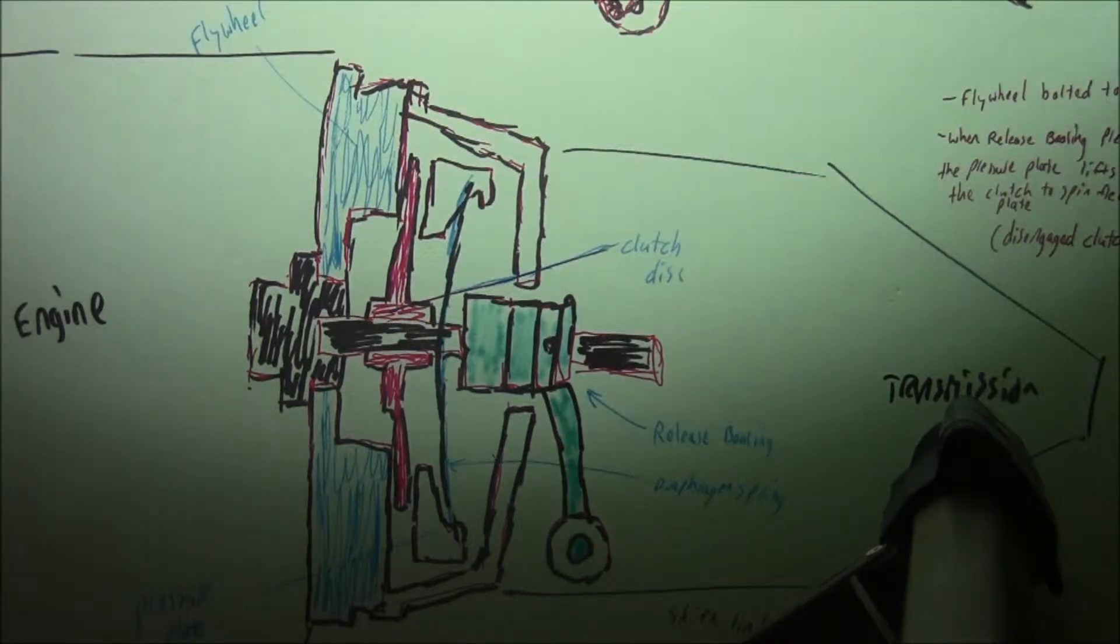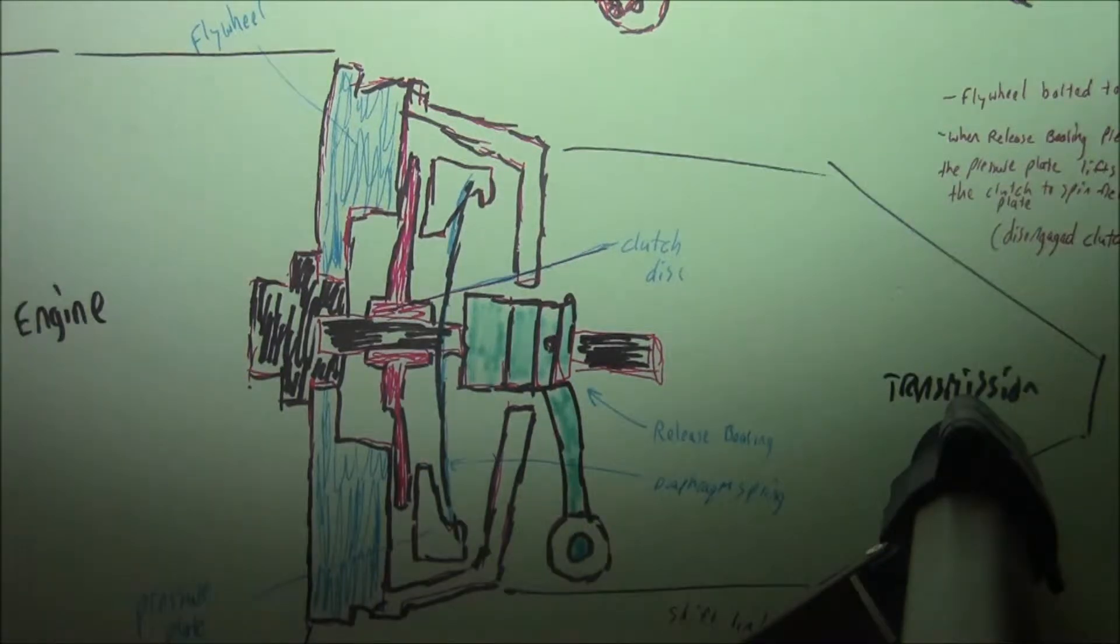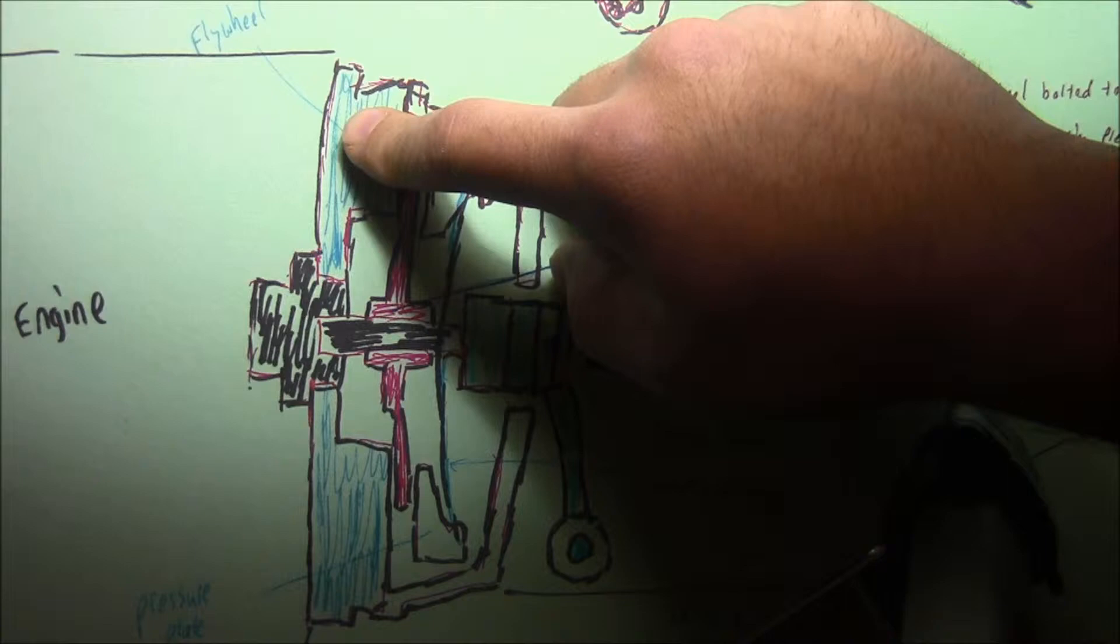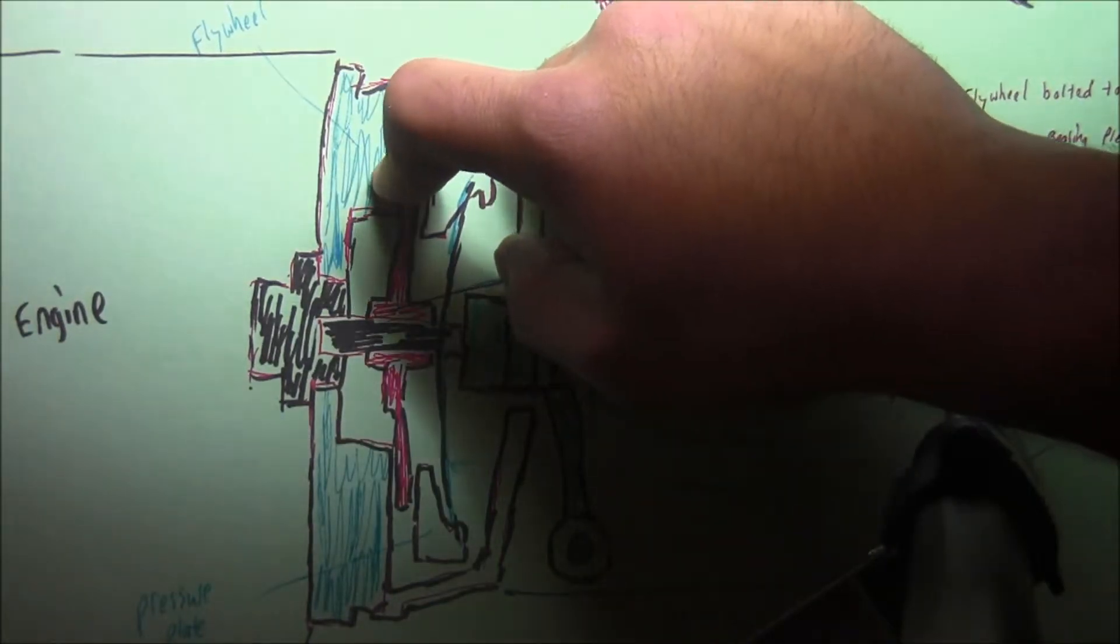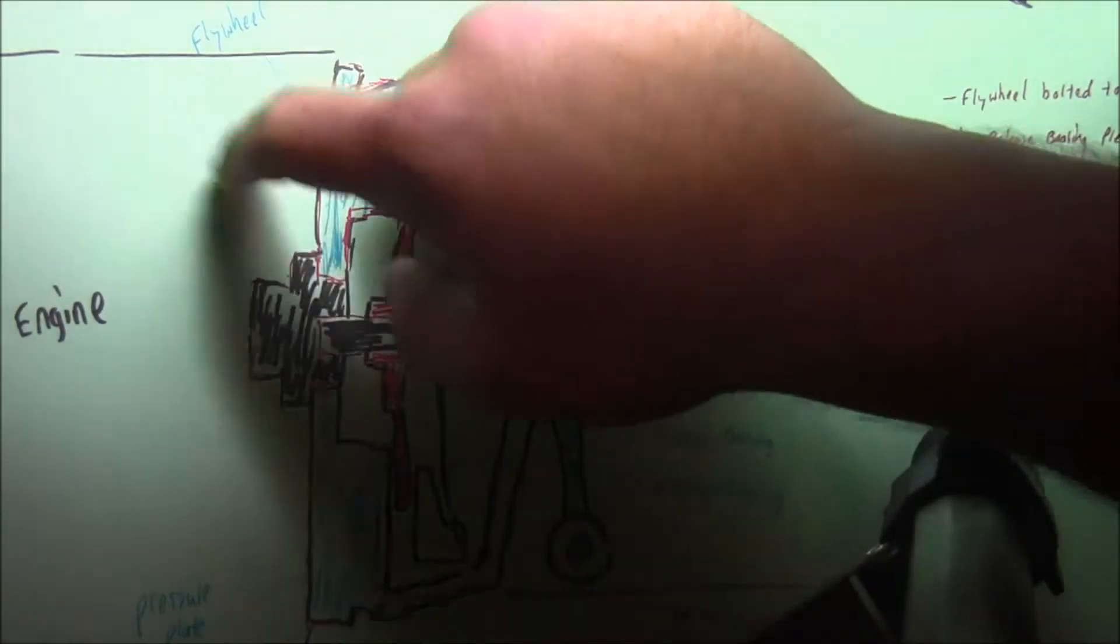This transmission of power uses some devices and these devices are as shown. You have a flywheel which is bolted and connected to your engine.